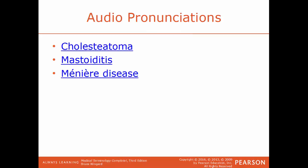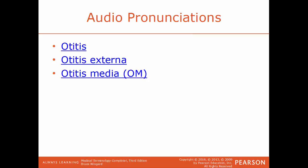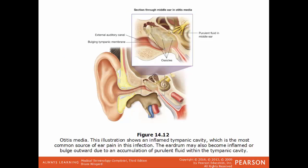Cholesteatoma is an abnormal, non-cancerous skin growth found in the middle section of the ear, right behind the eardrum. Mastoiditis is the inflammation of the mastoid process, found just behind the ear. Meniere's disease is a disorder of the inner ear that gives a person very severe dizziness, severe vertigo, tinnitus, and some hearing loss, and typically only impacts one ear. Otitis is an inflammation of the ear; depending on what part of the ear is inflamed, we have more specific names. Otitis externa is inflammation of the external ear — the outer ear and the ear canal. Otitis media (OM) is inflammation of the middle ear. In an example of OM, the tympanic cavity can be filled with fluid, which causes pressure on the eardrum; it is a very common site to become infected.